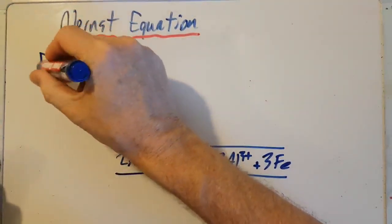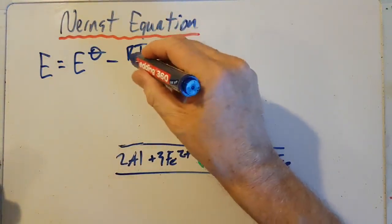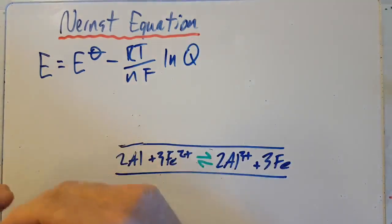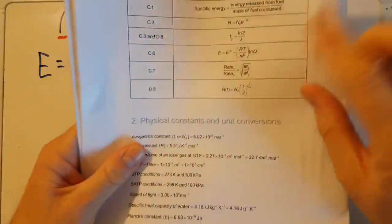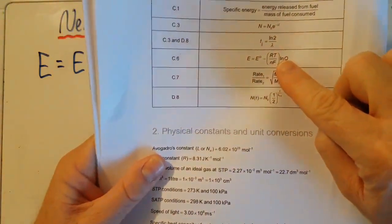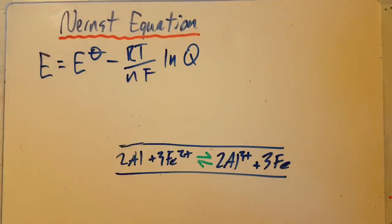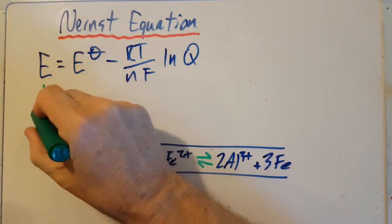So the Nernst equation involves messing around with the temperature and messing around with the concentrations of the ions in the solutions. We don't include in the Nernst equation how much aluminum and how much iron metal there is. All right, so here is the Nernst equation: E equals E theta minus RT over nF ln Q. Hells bells, that looks complicated. Well, the good news is that it's in the data booklet. But there's bad news too. There it is in the data booklet. The bad news is you have to memorize what all of that gubbins is.